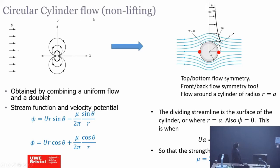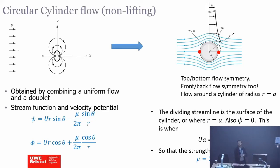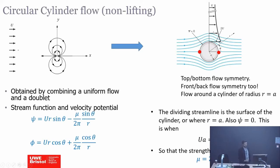This flow picture is non-lifting. Anyone can tell me why? Because the flow is symmetric top and bottom — there is nothing in the vertical direction. So just by looking at the flow picture, you can see there is no lift. This is why it's called a non-lifting cylinder.